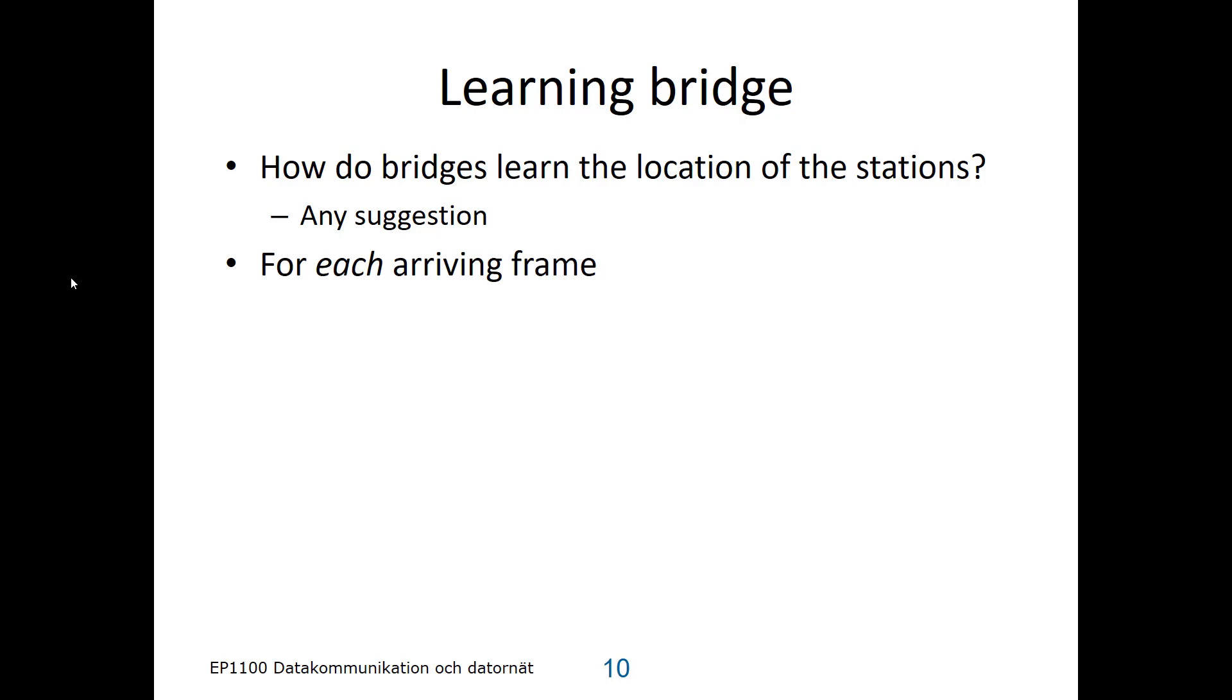Well, here's how it does. For each arriving frame, it extracts the source address and the port number, and adds that to the forwarding table. So it knows on which port the frame came in, and it knows what source address, what sender address that the frame had. And that can be marked that the sender address is connected to that port.